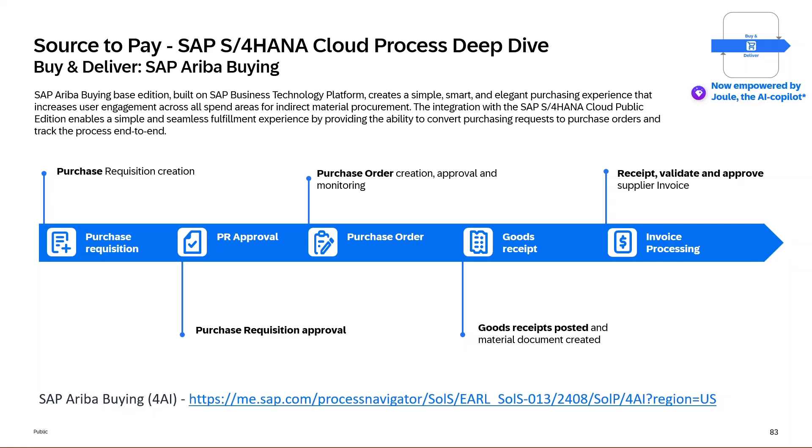You can also upload catalogs. Just to be clear, S4HANA Public Cloud does support internal catalogs as standard. This is an extended solution for indirect material procurement that provides a smart and elegant purchasing experience. If you follow the link to the Purchase Navigator here, you'll see further details on the scope item to deploy this capability.